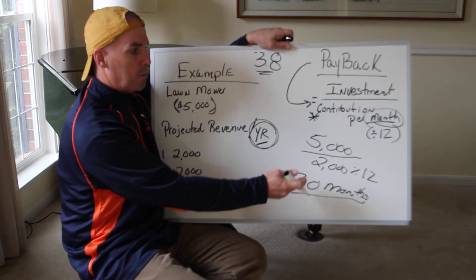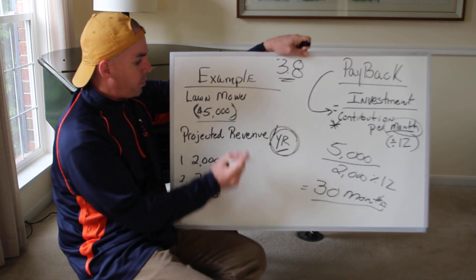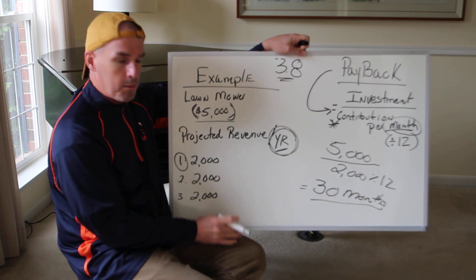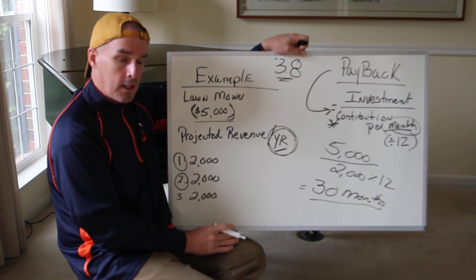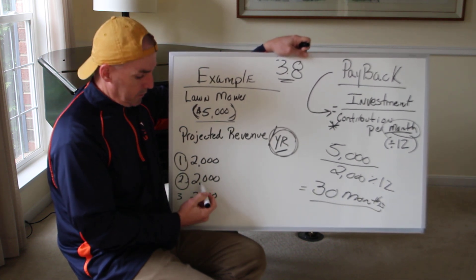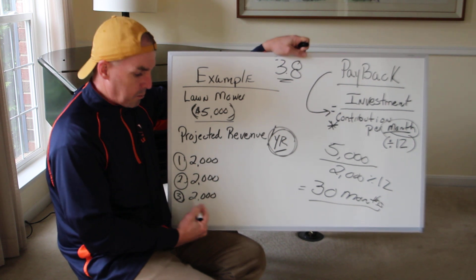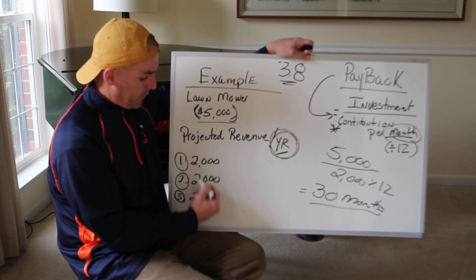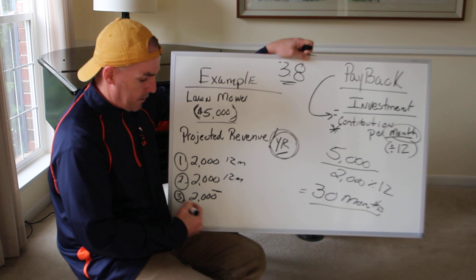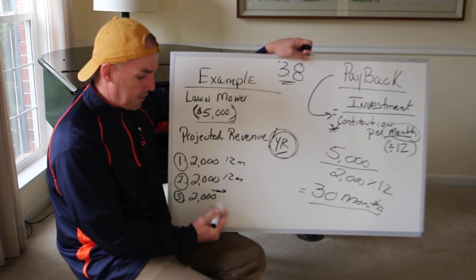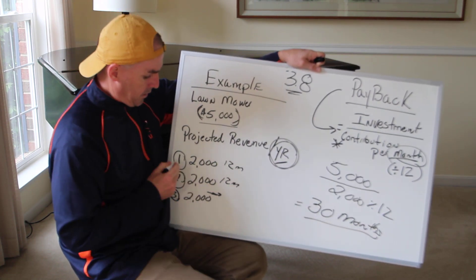Looking at it visually: I put out $5,000. The first year I only made $2,000, so I haven't made my money back. The second year I made another $2,000, so I'm $1,000 short. Then I go into year three, and somewhere in year three I get that back. That's 12 months, 12 months, and then somewhere in year three I make my money back.